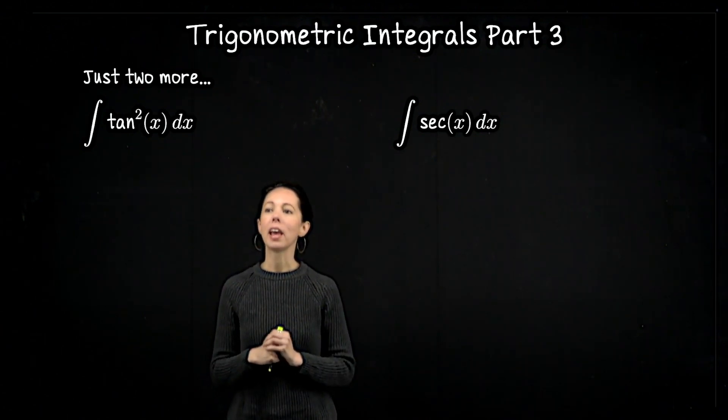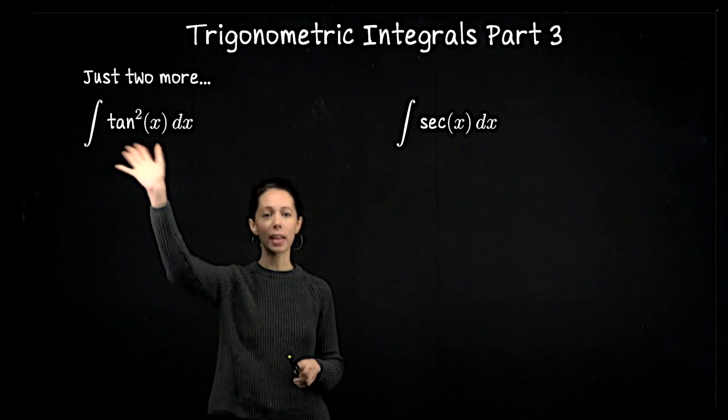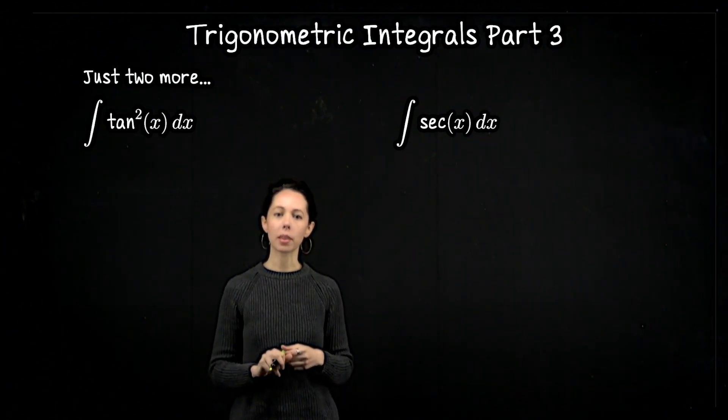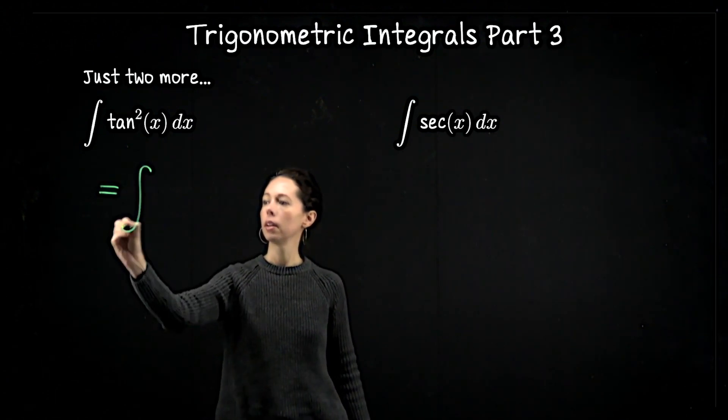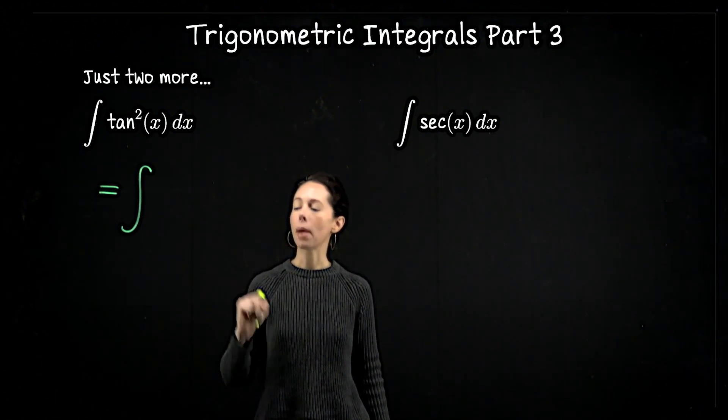The first one involves taking tangent squared and replacing it using the Pythagorean identity. So in particular, we can say that tan²(x) is sec²(x) - 1.